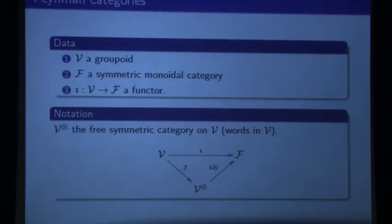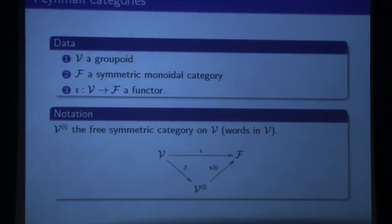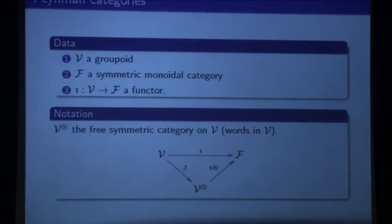And since this is a universal thing, I know there is some universal thing called a free symmetric monoidal category. I won't define that, but it's basically words — you take objects and write a word in these objects. And since this is monoidal, this functor will factor through the free symmetric monoidal category I tensor. I'll give the definition and then the rest will be examples.